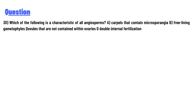The answer choices are: (A) carpels that contain macrosporangia, (B) free-living gametophytes, (C) seeds that are not contained within a fruit, or (D) double internal fertilization. What is the answer to this question?